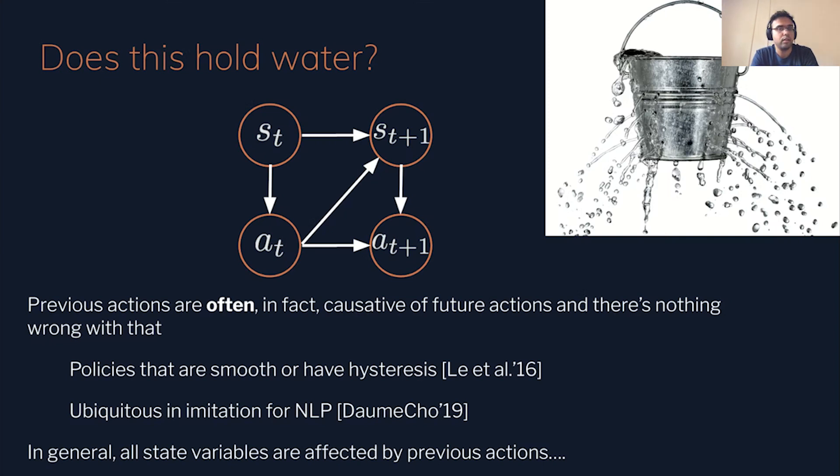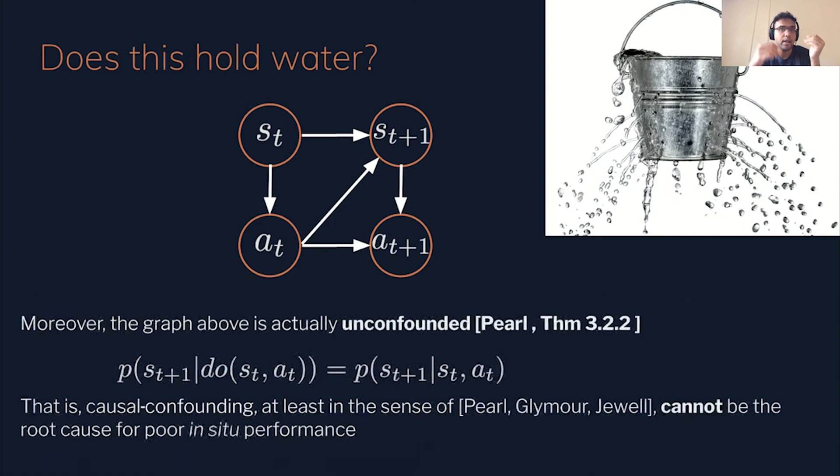However, two things are unclear. Number one, are past actions really a confound? Number two, do they necessarily have to be deselected? Let's begin with point number two. There are many cases where past actions do indeed affect future actions. Take the example where experts may smoothly change their actions over time or have some amount of hysteresis. In this case, future actions are constrained to be similar to the previous action. This is also very common in NLP, where translation of a given word in a sentence depends on the translation of the previous word. In fact, in general NLP, the past action may affect all the states in st+1 equally. So it's unclear if feature selection will really help in such cases.